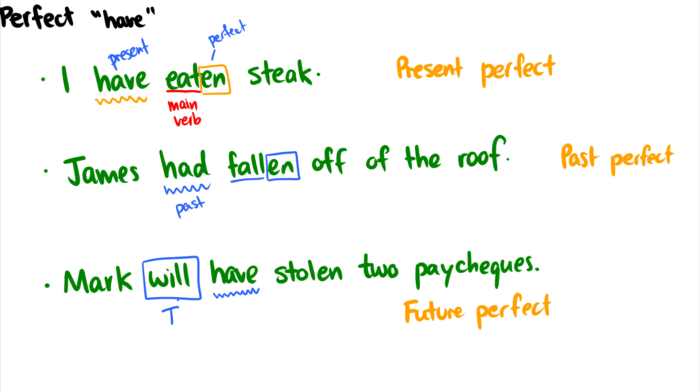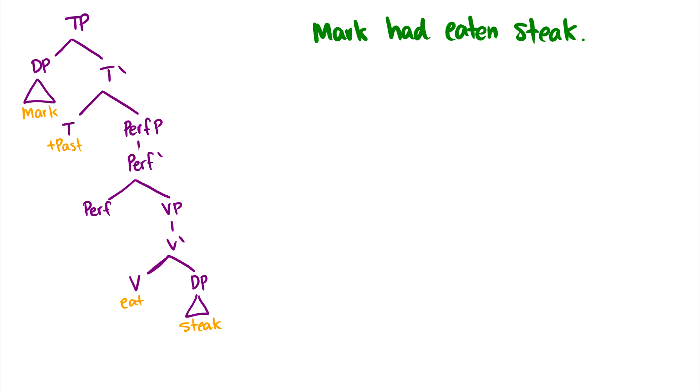So, the question is, we already have a main verb. So, what do we put this perfect have under? In this third sentence, we see that we have will going under T and then stole is going to go under V. So, we have this intermediary word. So, what kind of phrase do we put it under?